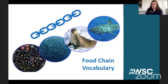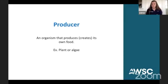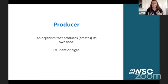To better explain this, we'll get into some vocabulary. The first thing we look at is a producer — every food chain has a producer, which is an organism that produces or creates its own food. This would be some type of plant or algae. Producers often make their own food through a process called photosynthesis, using sunlight to convert the sun's energy into a food source. So producers are actually making their own food.